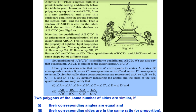Here you can also note that vertex A' corresponds to vertex A, B' corresponds to B, C' corresponds to C, and D' corresponds to D. By actually measuring the angles and sides of the two quadrilaterals you can verify that angle A = angle A', angle B = angle B', angle C = angle C', angle D = angle D', and AB/A'B' = BC/B'C' = CD/C'D' = DA/D'A'.